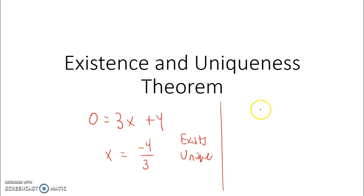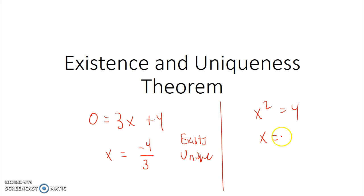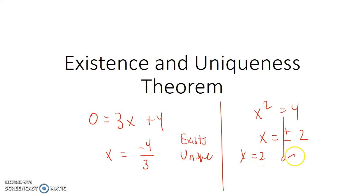Is it unique? This is the only solution that satisfies the equation, so in this case the solution is unique as well. However, if we consider something like a quadratic — x squared equals 4 — then a solution certainly exists, but the solution is not unique because we have x equals 2 or x equals negative 2.